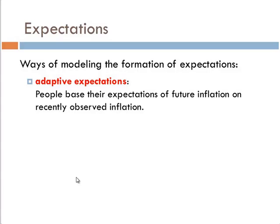Adaptive expectations are this: people base their expectations of the future inflation, or future whatever, on recently observed variables. Basically, what do I say? My best guess of what the price level tomorrow will be is what the price level today is. So if we have an inflation rate of 2% today, I'm going to expect an inflation rate of 2% tomorrow. That's essentially what we mean by adaptive expectations.